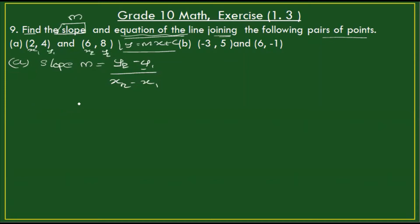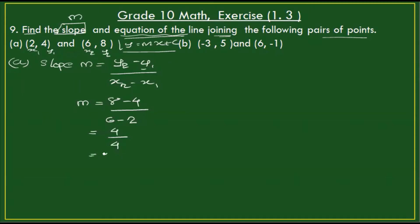So the slope m equals y2 minus y1 over x2 minus x1, which is a minus 4 over 6 minus 2. That gives us a minus 4 equal to 4, and 6 minus 2 is 4, so 4 by 4 is 1. That's why the slope is 1.